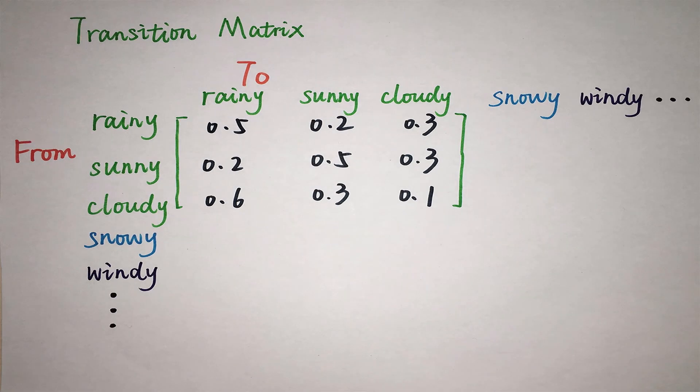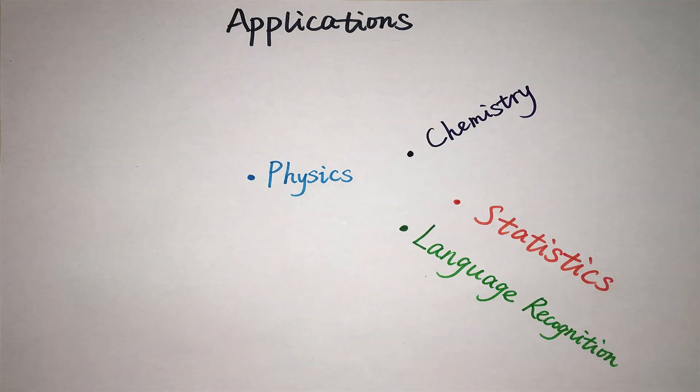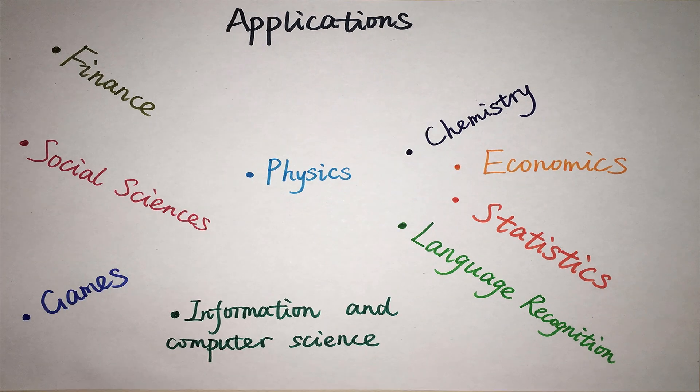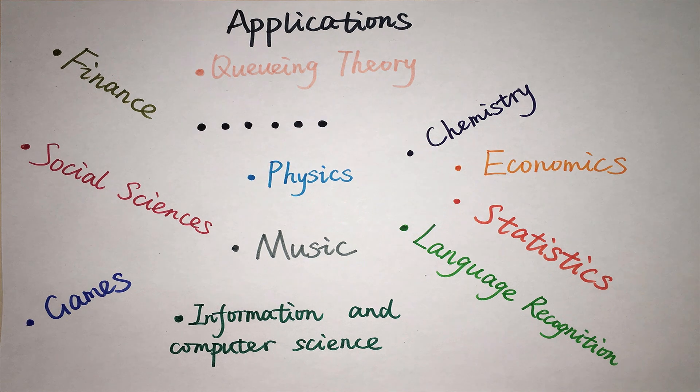Markov chains have many useful applications such as physics, chemistry, language recognition, statistics, and even music. Markov chains are often used in automatic generated music by AI. Here's a clip of the song Daddy's car. This song was automatically composed by Flow Machines, which is an AI created by researchers at Sony. And here he goes.